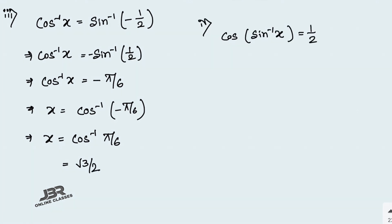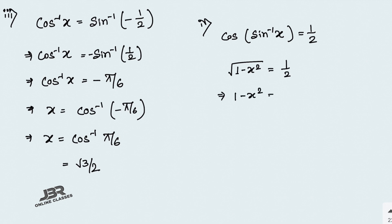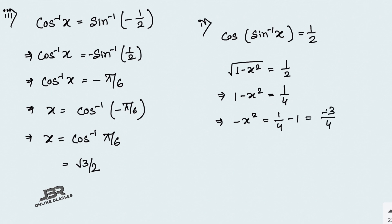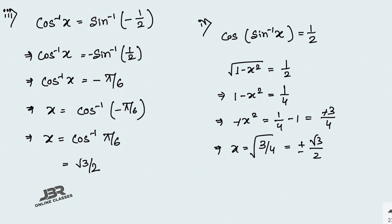Problem 4: cos(sin inverse x) equals 1/2. Using the formula, cos(sin inverse x) equals root(1 minus x²). So root(1 minus x²) equals 1/2. Squaring both sides: 1 minus x² equals 1/4, so x² equals 3/4. Therefore x equals plus or minus root 3 over 2.